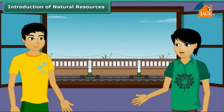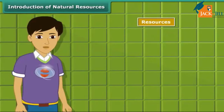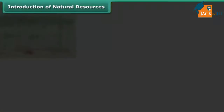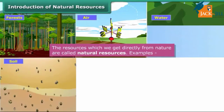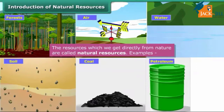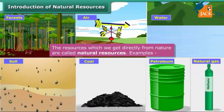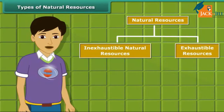Now electric engines are frequently used all over the world. Resources are of two types: natural and man-made. Natural resources such as forests, air, water, soil, coal, petroleum and natural gas are directly obtained from nature. Natural resources can be broadly classified into two categories.